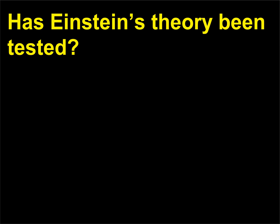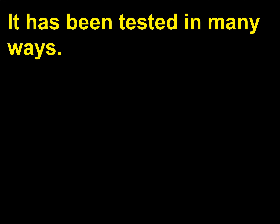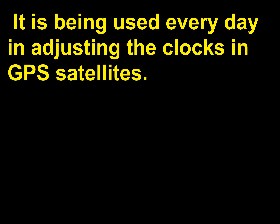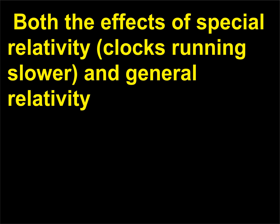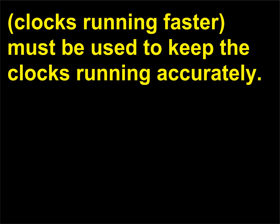Has Einstein's theory been tested? It has been tested in many ways. It is being used every day in adjusting the clocks in GPS satellites, which run faster because they are at high altitudes where the distortion of space-time is smaller. Both the effects of special relativity (clocks running slower) and general relativity (clocks running faster) must be used to keep the clocks running accurately.